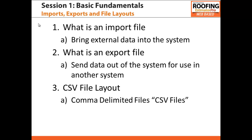CSV stands for Comma Separated Values, and basically what that means is that each line in the file represents a single row or record of data, and the columns within the row, also known as fields, are represented by separating each with a comma between them. Additionally, some CSV files put a special row of data in the first row of the file, known as a header row. This special row lists all the names of the fields and allows somebody who looks at the file to know what type of data is listed in each column position in the remaining rows.